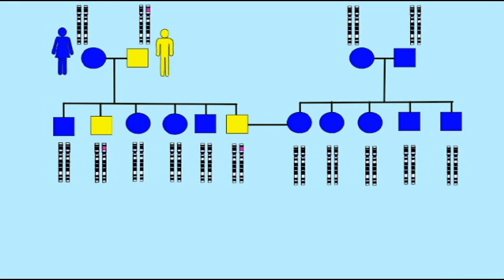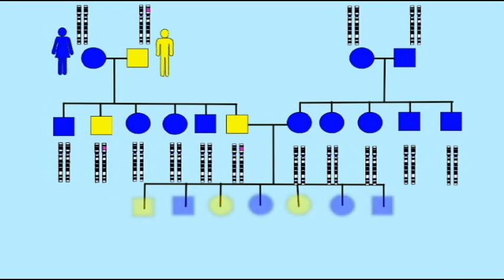Now notice that in the last generation, it is possible to have the yellow phenotype without this pink section of DNA, and vice versa. It is possible to get the pink section of DNA without the yellow phenotype.